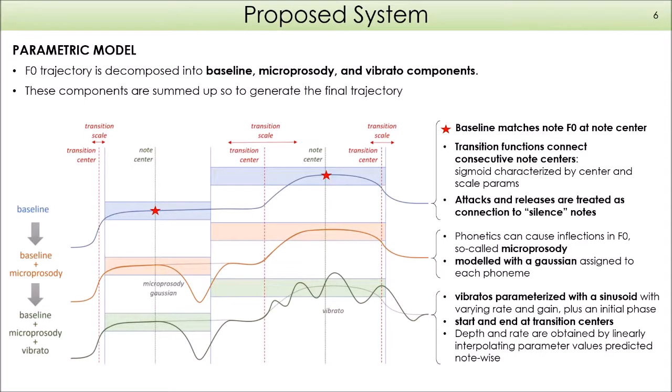The parametric model decomposes the F0 curve into a set of components: baseline, microprosody, and vibrato. These components are added together for generating the final curve. In this representation, from top to bottom, we can see the baseline in blue, baseline and microprosody in orange, and in green, baseline microprosody and vibrato. The red stars indicate that the baseline matches note F0 at note centers.